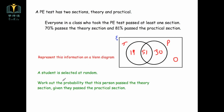The next part is very important: a student is selected at random. Work out the probability that the person passed the theory section, given that they passed the practical section. Since we know they passed the practical section, we're only considering the 81 people inside that circle — 51 who passed both, and 30 who passed practical only. The probability they also passed theory is 51 out of 81.